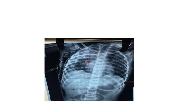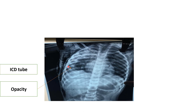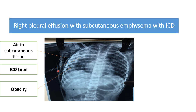This is the x-ray of a child who had right-sided pleural effusion, for which ICD insertion was done, and iatrogenic subcutaneous emphysema also developed. The abnormal radiological findings are opacity in the right lung field, ICD insertion, and air in the subcutaneous tissue. The diagnosis is right-sided pleural effusion with subcutaneous emphysema with ICD.